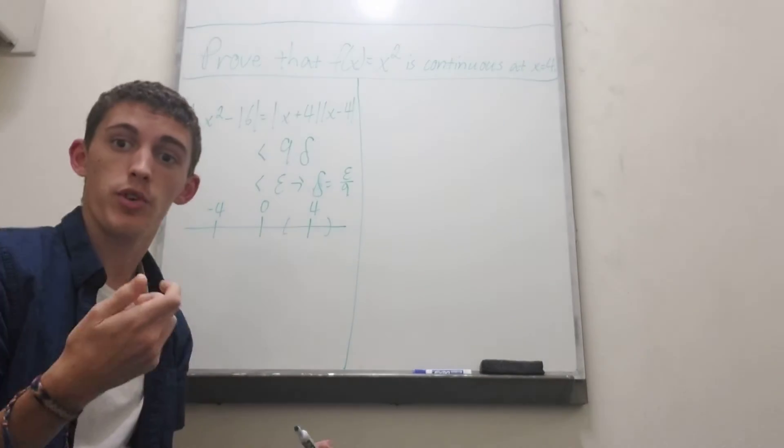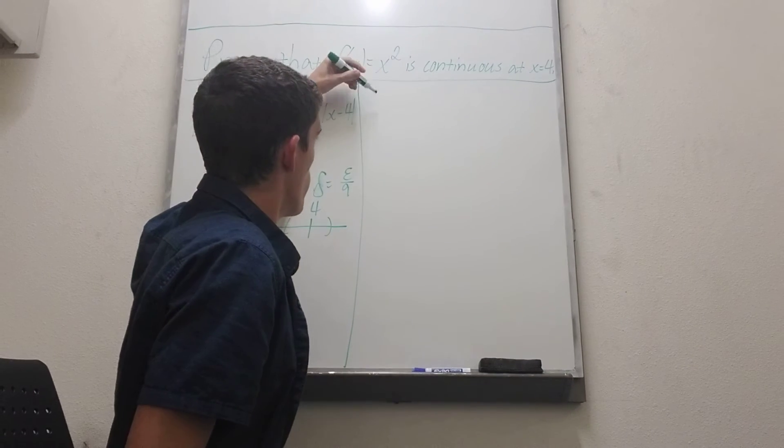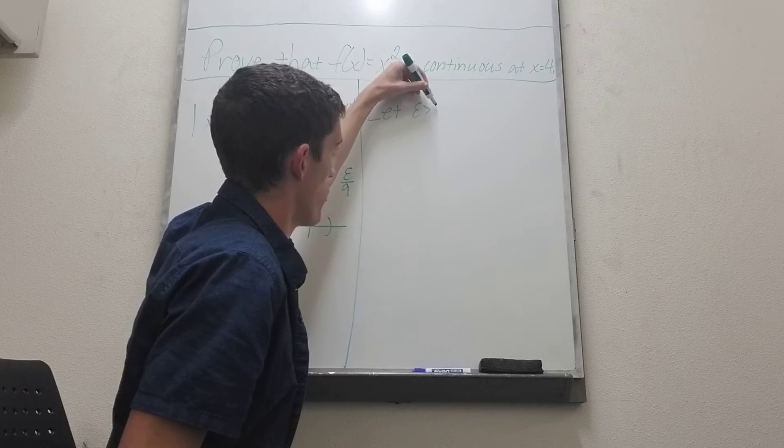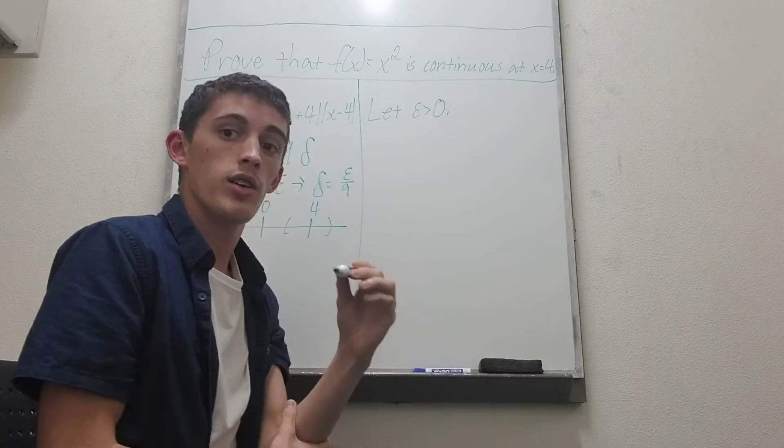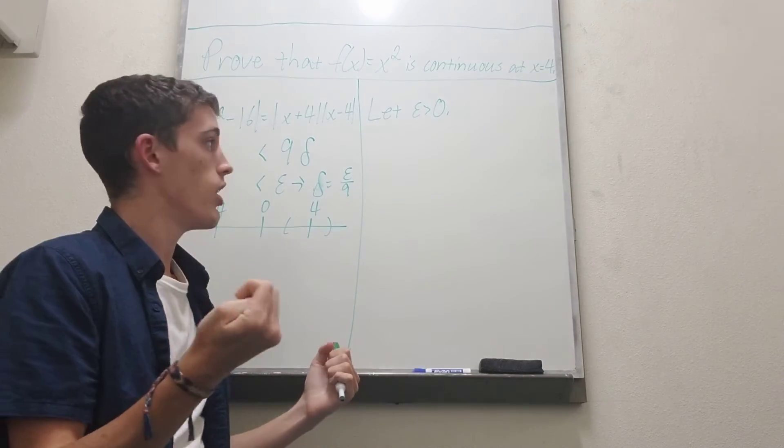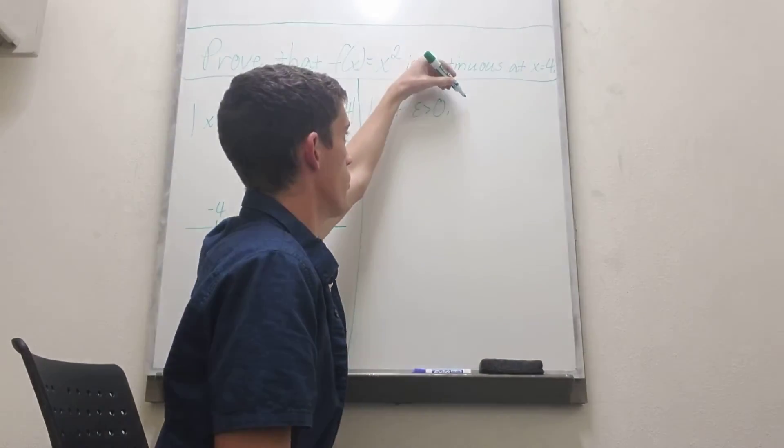Now we're going to write the proof. So as always, we're going to let epsilon be greater than 0. And now remember how I said we need to restrict our values of x to be within at least 1 of 4.